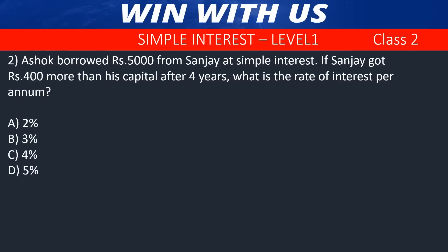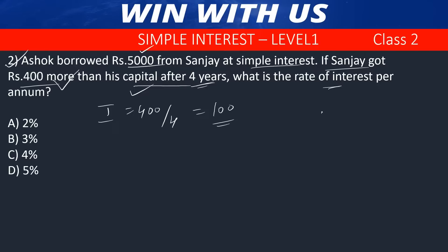Question number 2. Ashok borrowed 5,000 from Sanjay at simple interest. If Sanjay got 400 more than his capital after 4 years — capital meaning the principal of 5,000 rupees — the extra 400 rupees is the indirect interest paid. In 4 years, one year's interest is 100 rupees. Rate of interest = 100 divided by 5,000 principal into 100 = 2%. The answer is 2%.